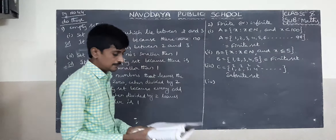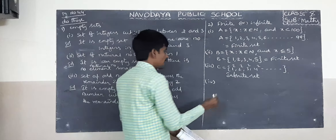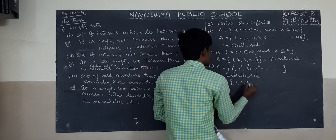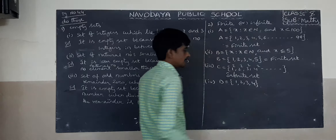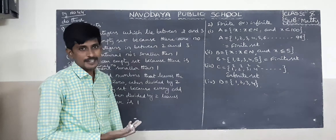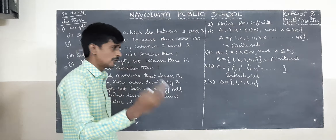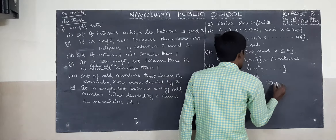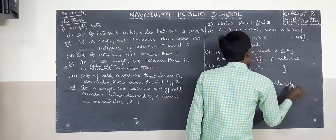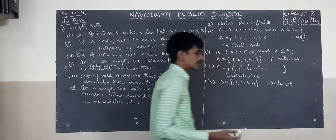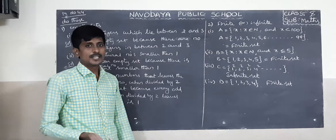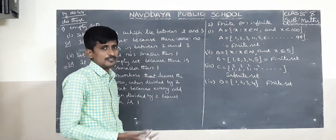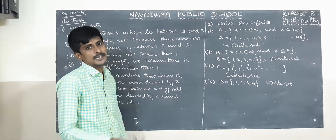Fourth one: D equals the set {1, 2, 3, 4}. The number of elements is finite, so it is a finite set. If the elements are countable, it is a finite set. If the elements are uncountable, it is an infinite set.